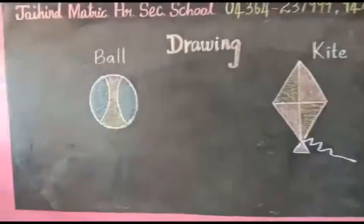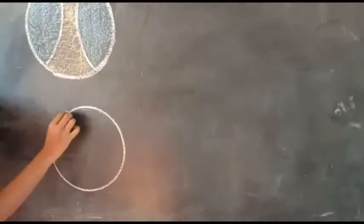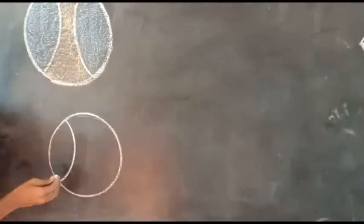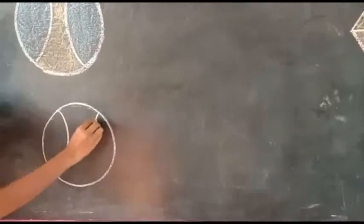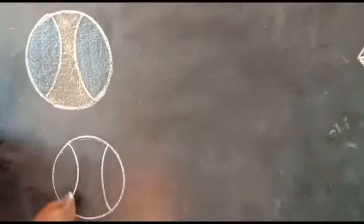First, we draw a ball. Draw a round. It is also known as circle. Draw left curve here. Next, draw right curve here. Now, we get a ball and colour it.